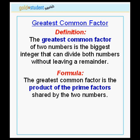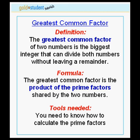Next, let's look at the formula. The greatest common factor is the product of the prime factors shared by the two numbers. Therefore, in order for you to calculate the greatest common factor, you will need to know how to calculate the prime factors of the two numbers.